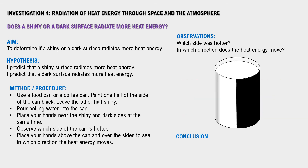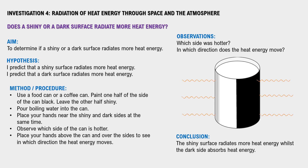You should feel that the shiny surface is hotter. This is because the shiny surface radiates heat energy whilst the dark surface absorbs heat energy. You ought to also feel that the heat is not only above the can — it is all around the can. We can say that heat energy moves in all directions during radiation. We may conclude that a shiny surface radiates heat energy whilst a dark surface absorbs heat energy.